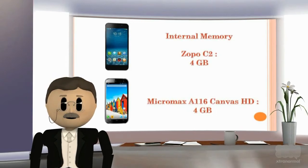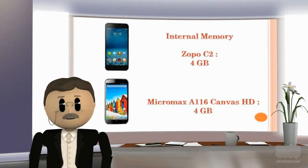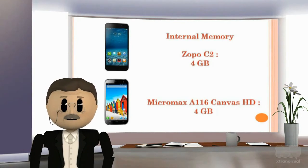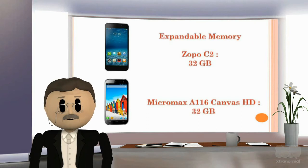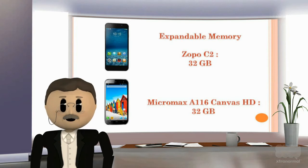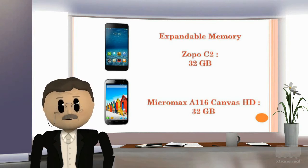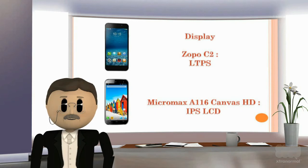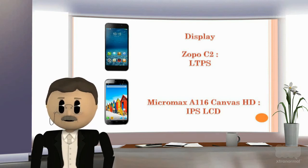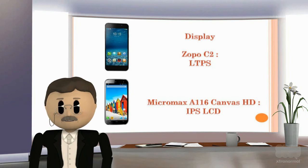Internal memory of both the Zopo C2 and the Micromax A116 Canvas HD is 4 GB. Expandable memory for both devices is up to 32 GB. Display of the Zopo C2 is LTPS, while the Micromax A116 Canvas HD features an IPS LCD display.